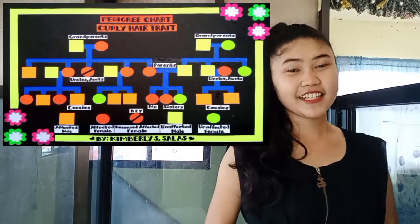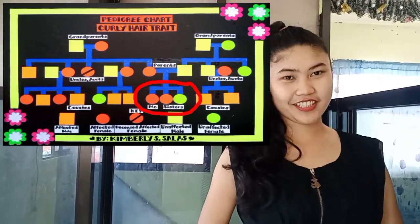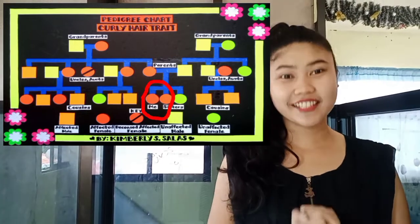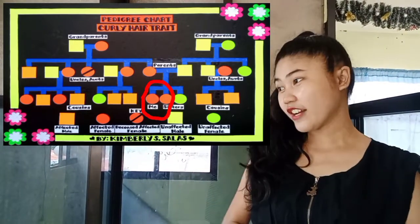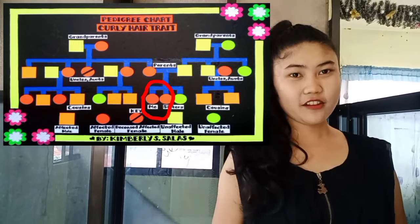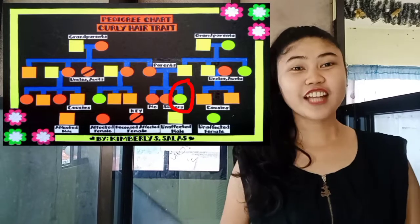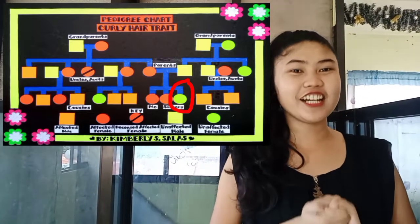Last but not the least, this is me and my sisters. As we can see, me and one of my sisters are affected with the trait, while my youngest sister does not possess the curly hair trait. That's all everyone, and I hope you all understand my explanation. Thank you for listening!